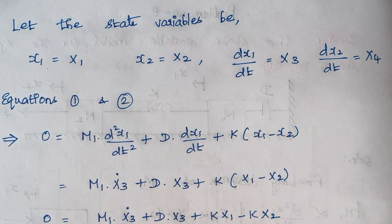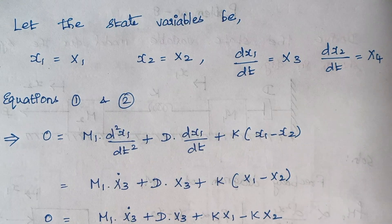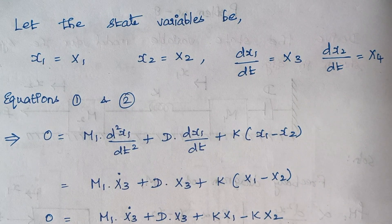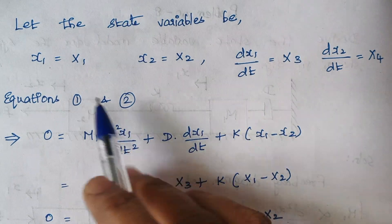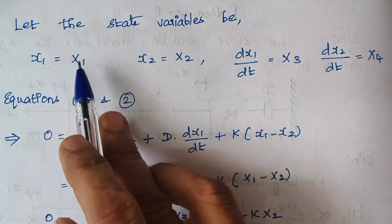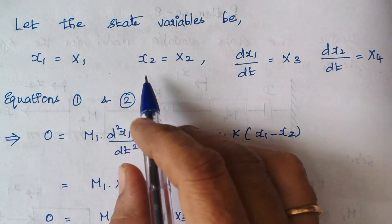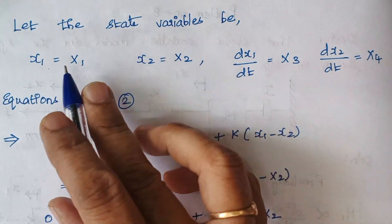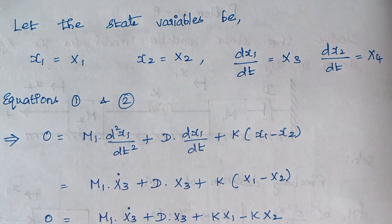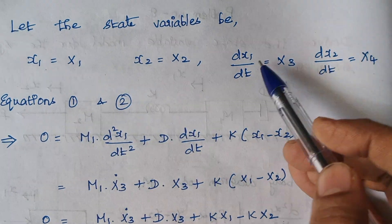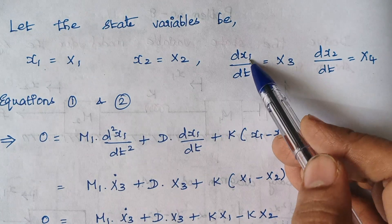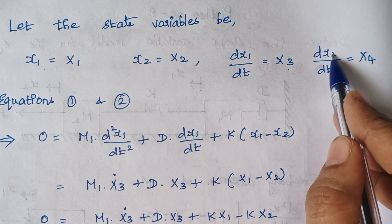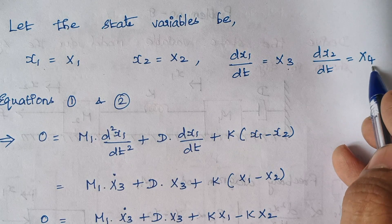Now we are framing our state variables. From the diagram we have two displacements: x1 and x2. So x1 and x2 are state variables. The first differentiation of x1 is equal to x3, and the differentiation of x2 is equal to x4.